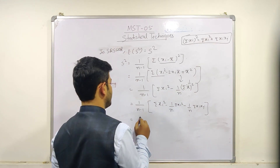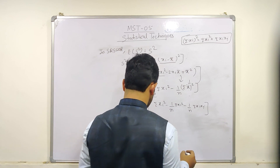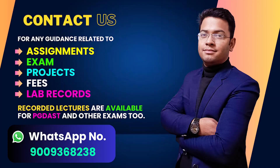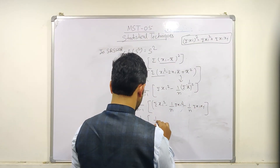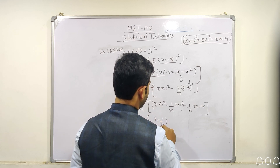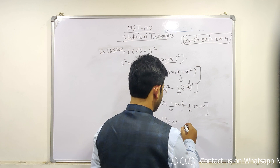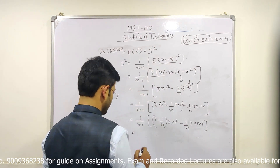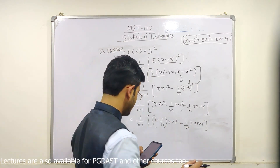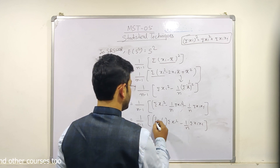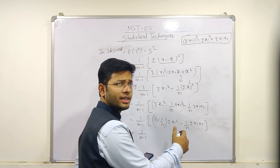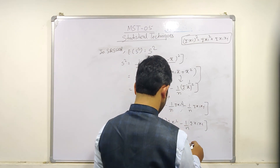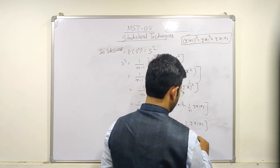So we have 1/(n−1) times the summation. We take common values: (1 − 1/n)·Σxi² − (1/n)·Σxi·xj. By applying LCM, this becomes (n−1)/n · Σxi² − (1/n)·Σxi·xj, all multiplied by 1/(n−1).